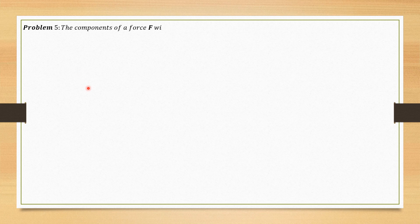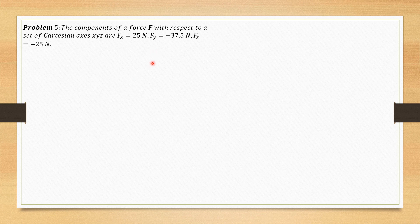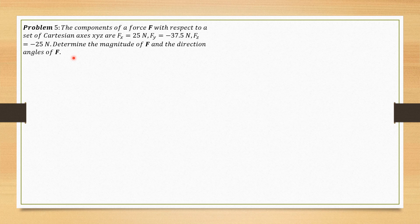For problem 5: the components of a force F with respect to Cartesian axes XYZ are Fx = 25 N, Fy = -37.5 N, Fz = -25 N. Determine the magnitude of F and the direction angles. We expect two angles to be more than 90 degrees because two components are negative — specifically, θY and θZ should both be greater than 90 degrees.